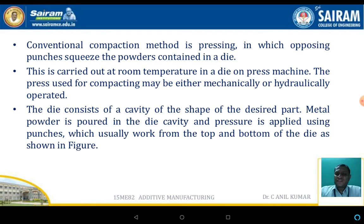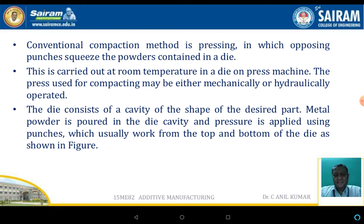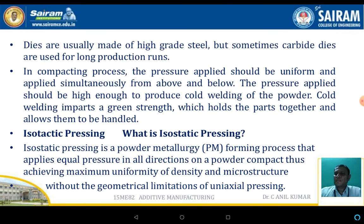The conventional compaction method is pressing, where opposing punches squeeze the powder contained in a die. This is carried out at room temperature using a pressing machine. The press used for compacting may be mechanical or hydraulic. The die consists of a cavity into which metal powder is poured, and pressure is applied by moving the punch. Dies are usually made of high-grade steel, though carbide dies are also used for some applications.